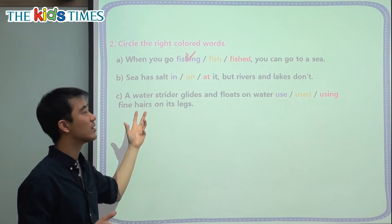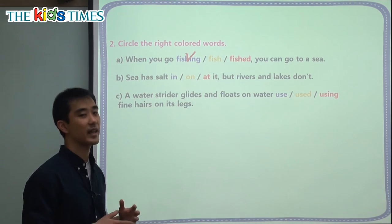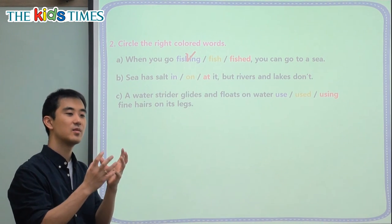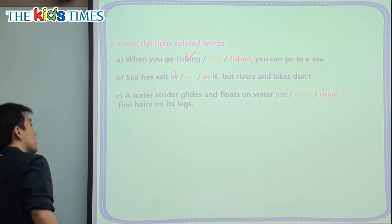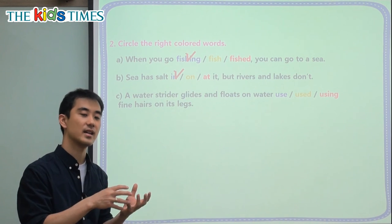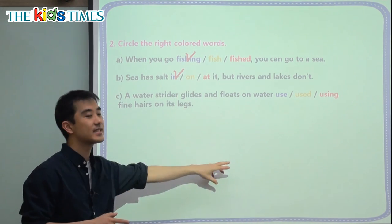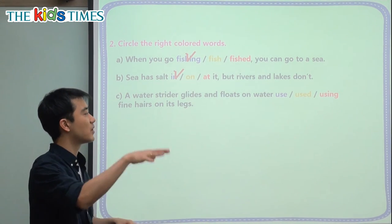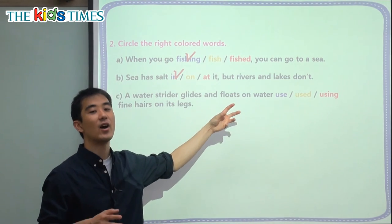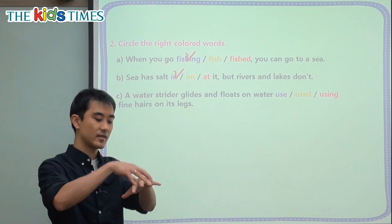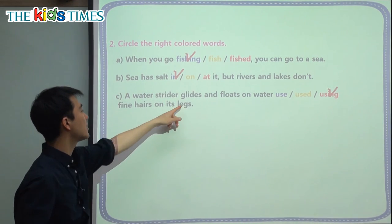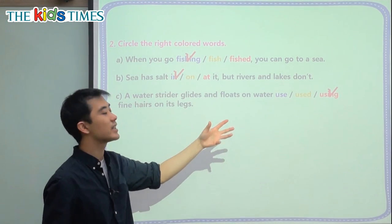B: Sea water has salt in it, but rivers and lakes do not. The sea, 바다, has salt — 소금 — inside it. 바다 물은 소금이 안에 들어있다. So we say in the water there is salt — 소금 inside the water. C: A water strider — that insect, that bug we saw before — glides and floats on the water using fine hairs on its legs. On its legs, 다리에, there is 털 — hairs. So it is using fine hairs.